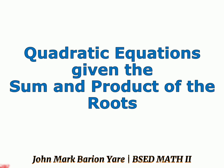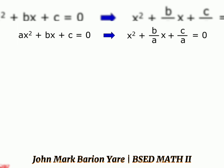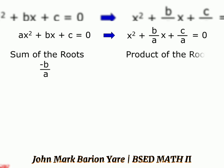Let us begin. Let us consider a quadratic equation of the form ax squared plus bx plus c equals 0. If we divide both sides of this equation by a, the equation becomes x squared plus b over a times x plus c over a equals 0. The sum of the roots is negative b over a, and the product of the roots is c over a.